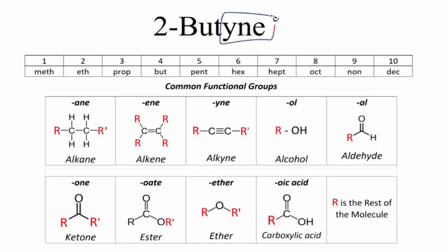We have YNE. When you see YNE at the end of a name, that means you've got an alkyne and you've got a triple bond. So we have our triple bond, and the butyne tells us the longest chain. So we have four carbons in the longest chain.